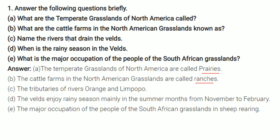Name the rivers that drain the velds. The tributaries of rivers Orange and Limpopo drain the velds. When is the rainy season in the velds? The velds enjoy rainy season mainly in the summer months from November to February. What is the major occupation of the people of South African grasslands? The major occupation is sheep rearing.